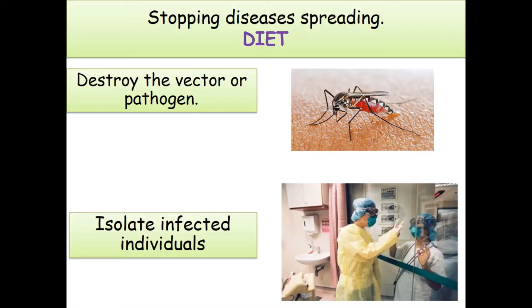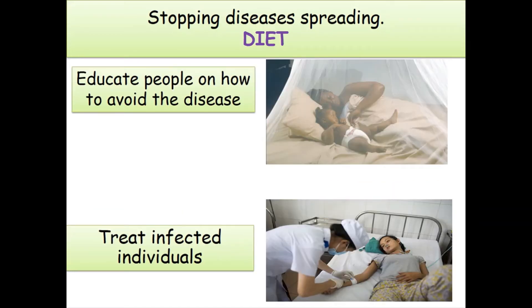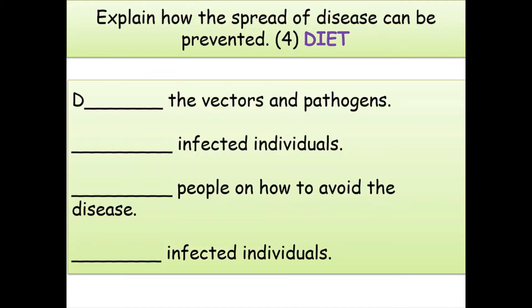Isolating infected individuals means keeping people separate so the disease cannot be transmitted from person to person. Educating people on how to avoid disease — for example, in the case of malaria, educating people about sleeping with mosquito nets to stop mosquitoes from biting them at night. Finally, treat infected individuals, because you wouldn't want to leave them walking around infecting everyone.